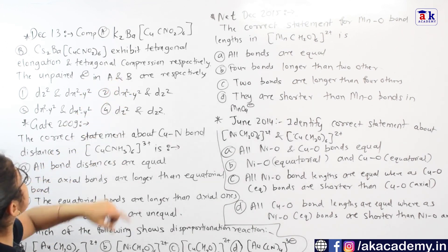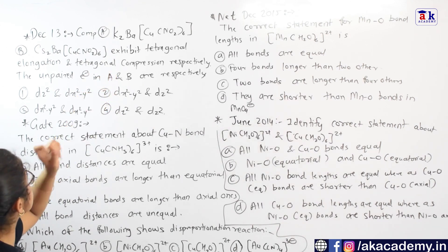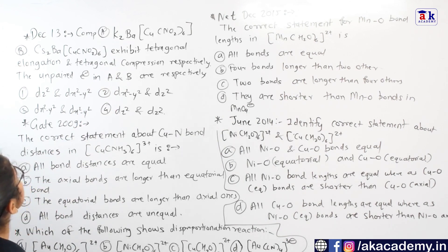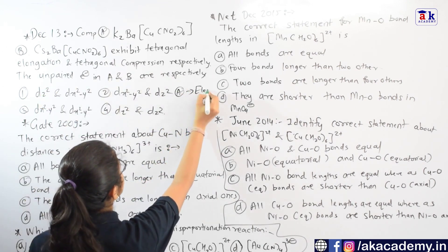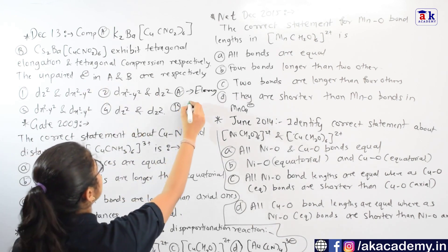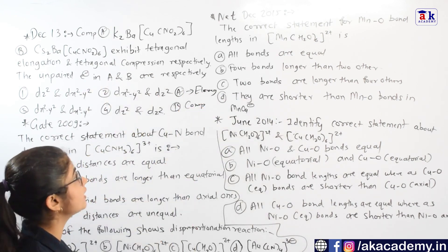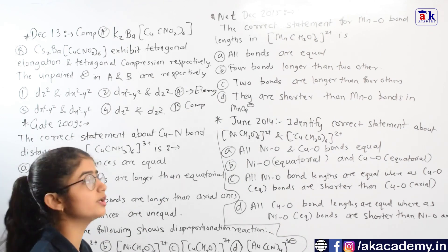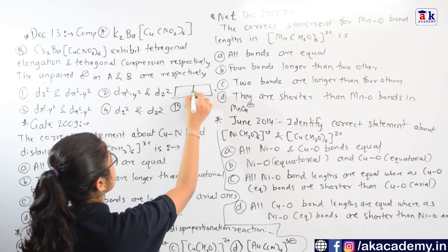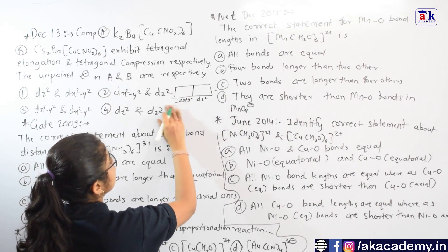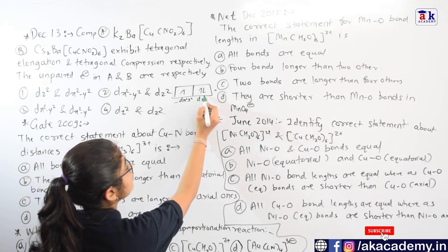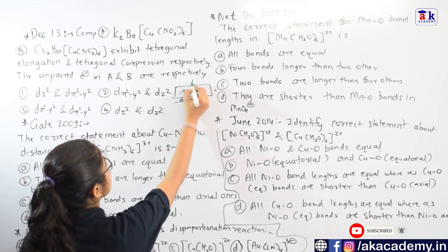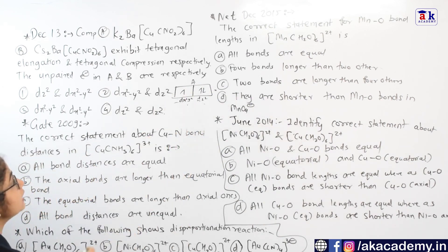This question was asked in December 2013. These two copper compounds, both in the +2 oxidation state, are said to exhibit tetragonal elongation and tetragonal compression respectively. In case of tetragonal elongation, the z-out condition applies, which occurs when dz² has more electron density. So dz² is going to have the paired electrons, and the unpaired electron in compound A (where elongation is taking place) is going to be in the dx²-y² orbital.